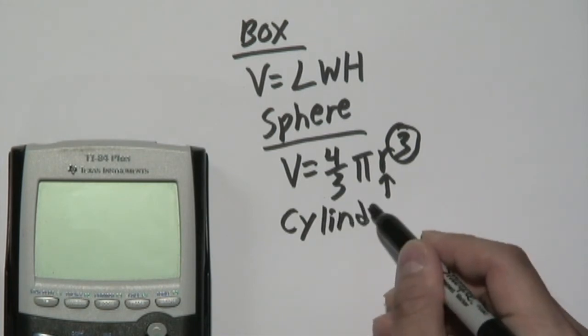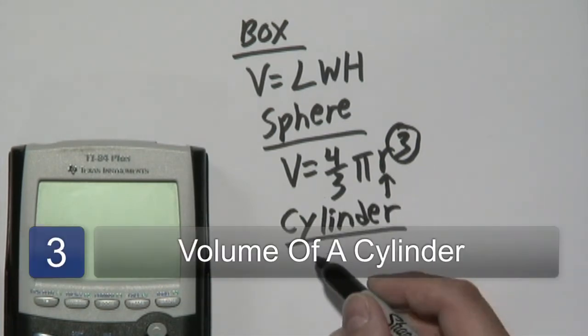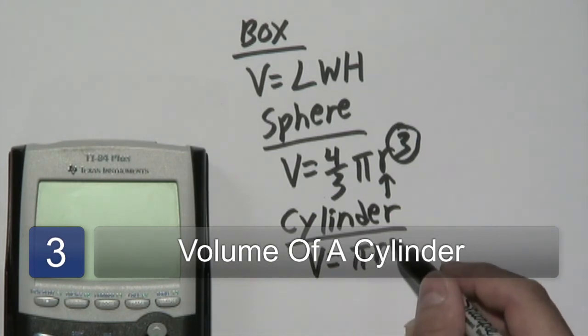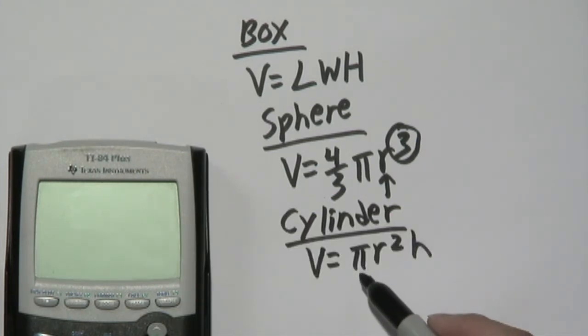And then one last example is that of a cylinder. The volume of a cylinder by definition is pi r squared h. You recognize pi as a number that's approximately 3.14.